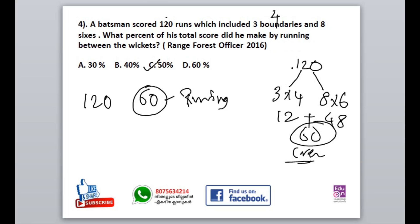With 90, 52 — that would have 60 runs. The other 60 runs are 60 runs from running between the wickets.